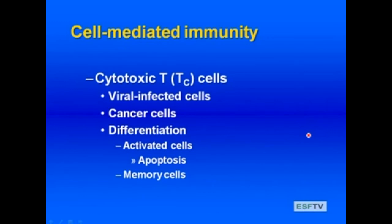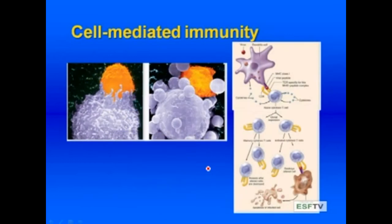The other direction is cell-mediated immunity via cytotoxic T cells. These cytotoxic T cells induce apoptosis — programmed cell death — of altered self cells, which are either virally infected cells or cancer cells. Naive cytotoxic T cells are activated by dendritic cells, undergo clonal division, and differentiate into activated cells that target altered cells causing apoptosis, as well as memory cells that can persist within the immune system.